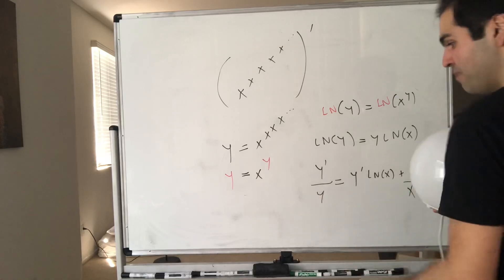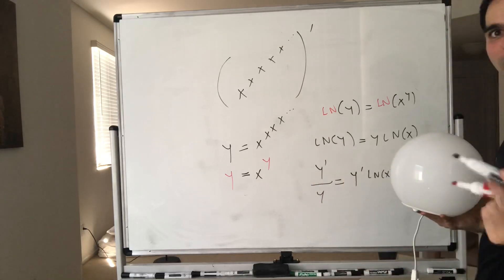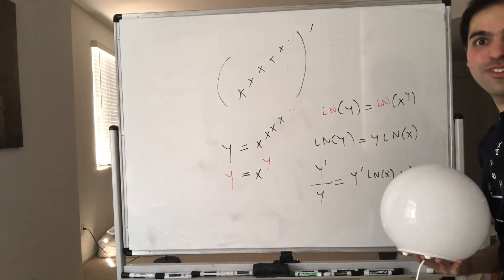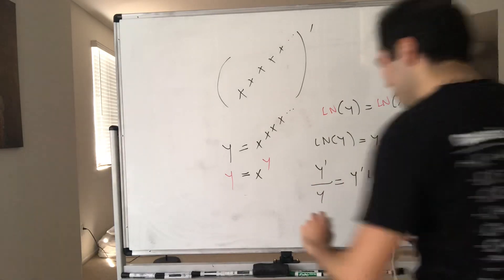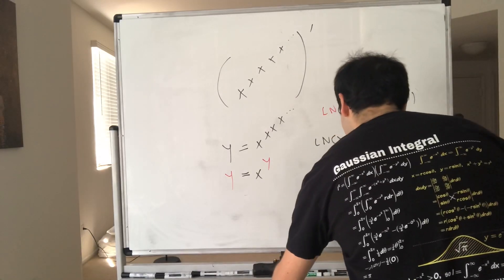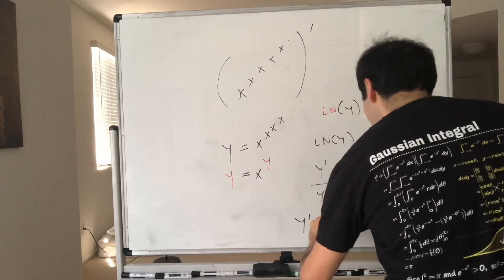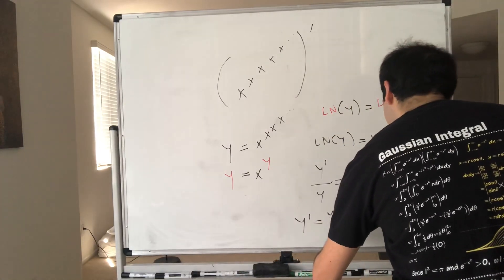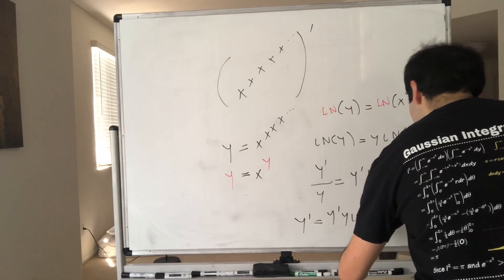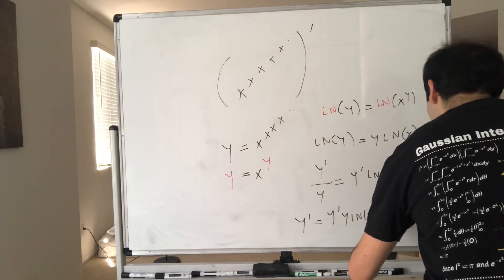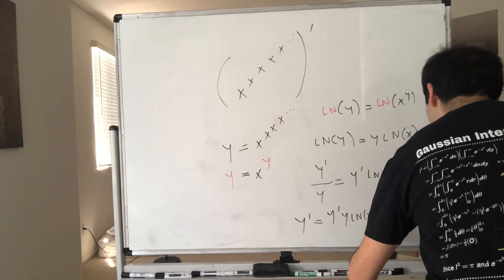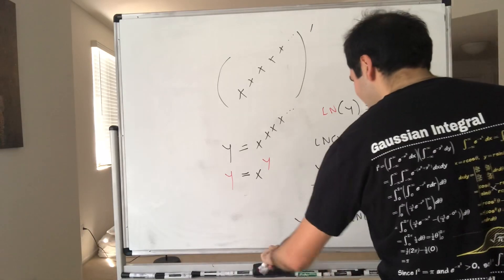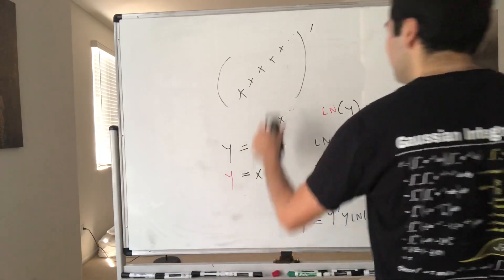And then let's multiply this by y because y don't like to be on the bottom. So y prime equals y prime times y ln of x plus y squared over x, and then let's solve for y prime.